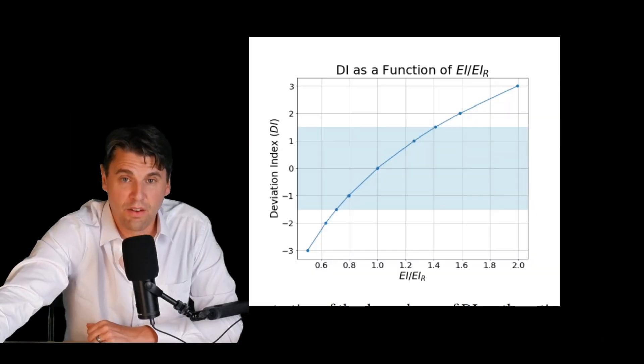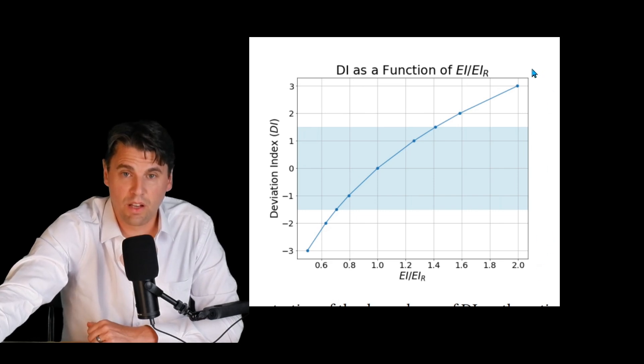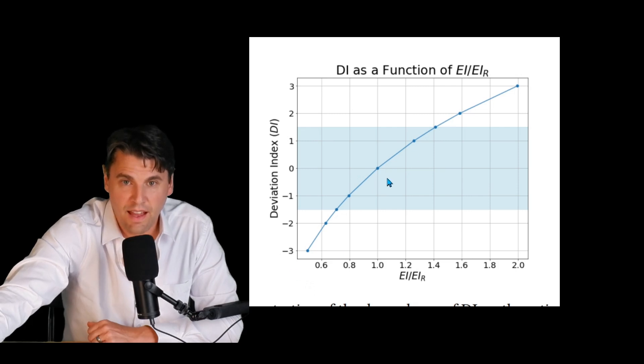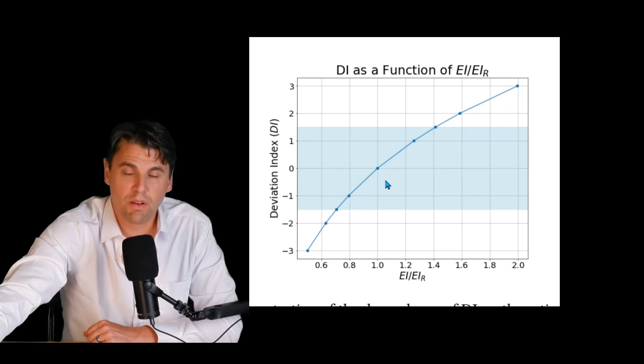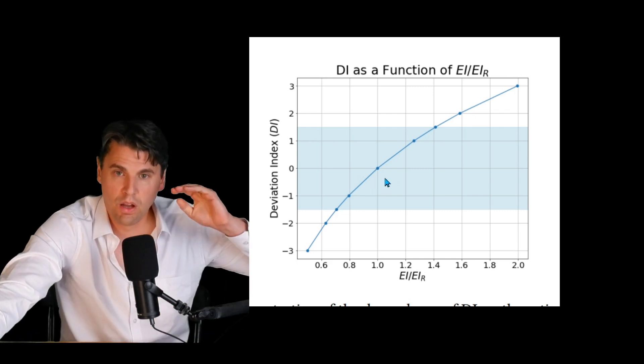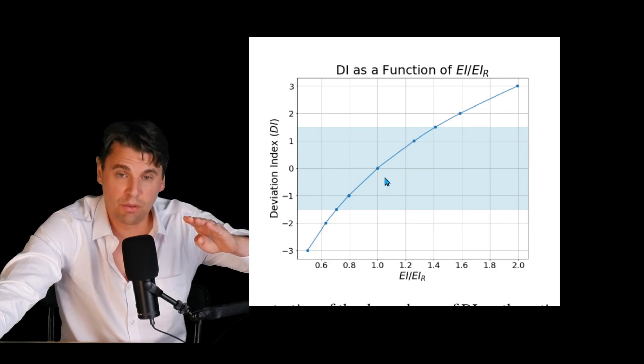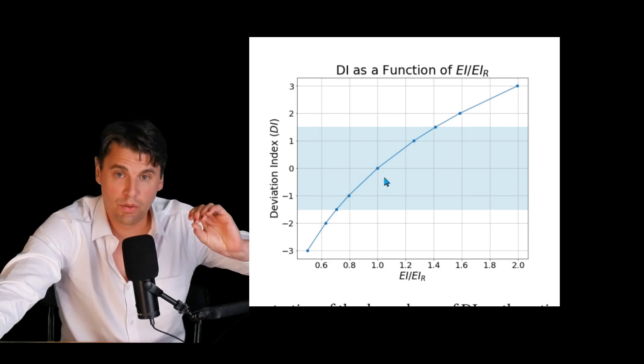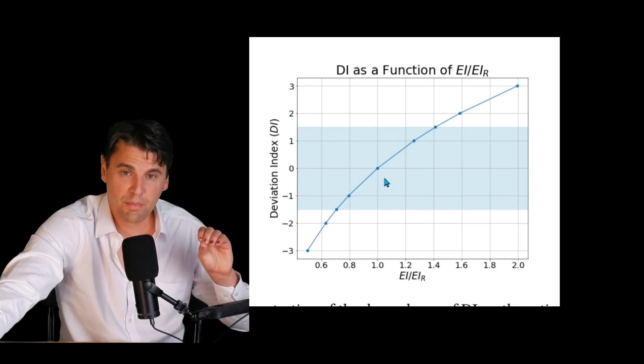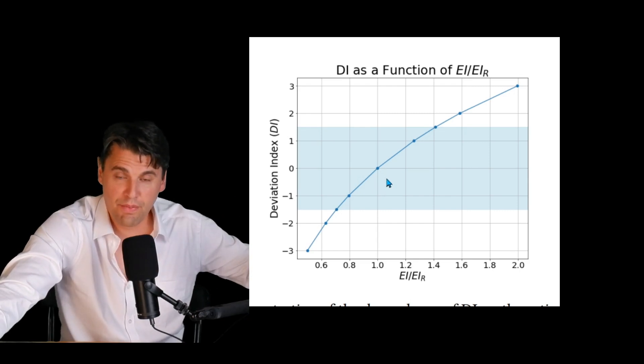To get a feeling of what this relationship is like, you can actually look at a plot like this to show you this log relationship. Again, this is the ideal point right here. If you have a zero deviation index, that's the best that you can do. And that's where you have the ratio of the actual exposure to the target exposure is just one. Sometimes the target exposure is also called the reference exposure.